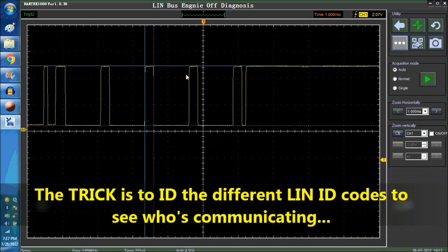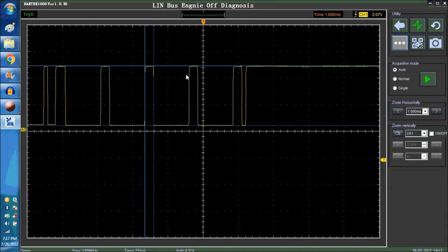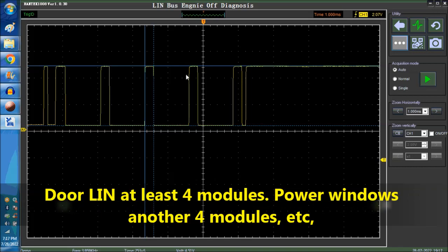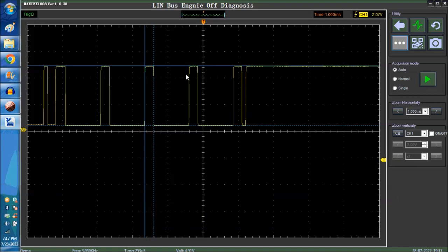Sometimes you have as many as 22 or 26 modules communicating on the LIN network. And sometimes each door, for example, has a separate LIN. These LIN little computers are very inexpensive. And so the front driver door has one, the passenger front is another one and everybody else uses a different one, and the same goes for the power windows and everybody else. So it is what it is. Unless you're really into this sort of thing, decoding the messages between the LIN bus.